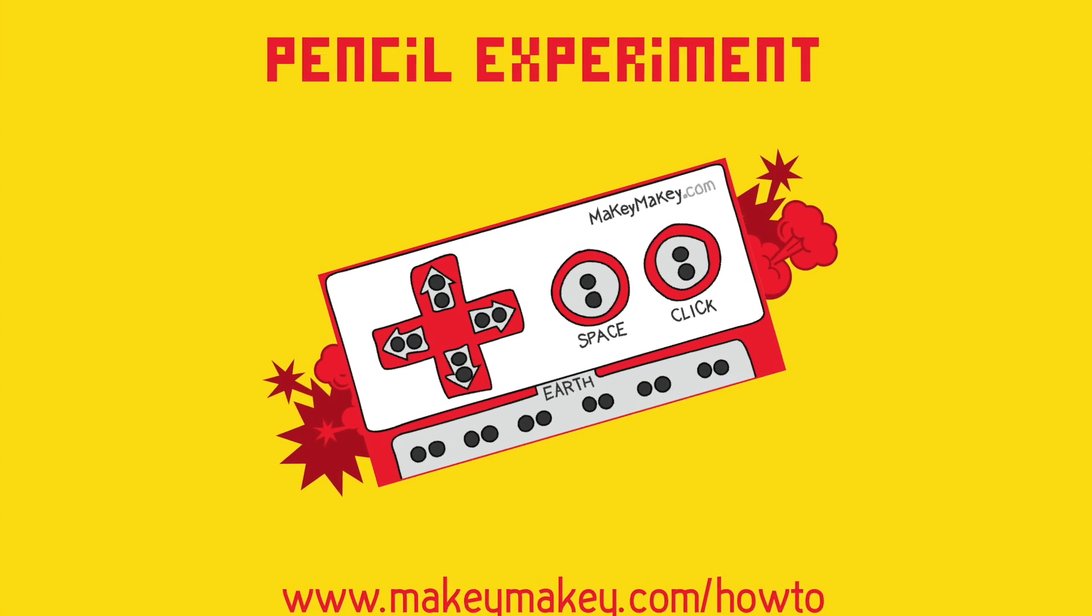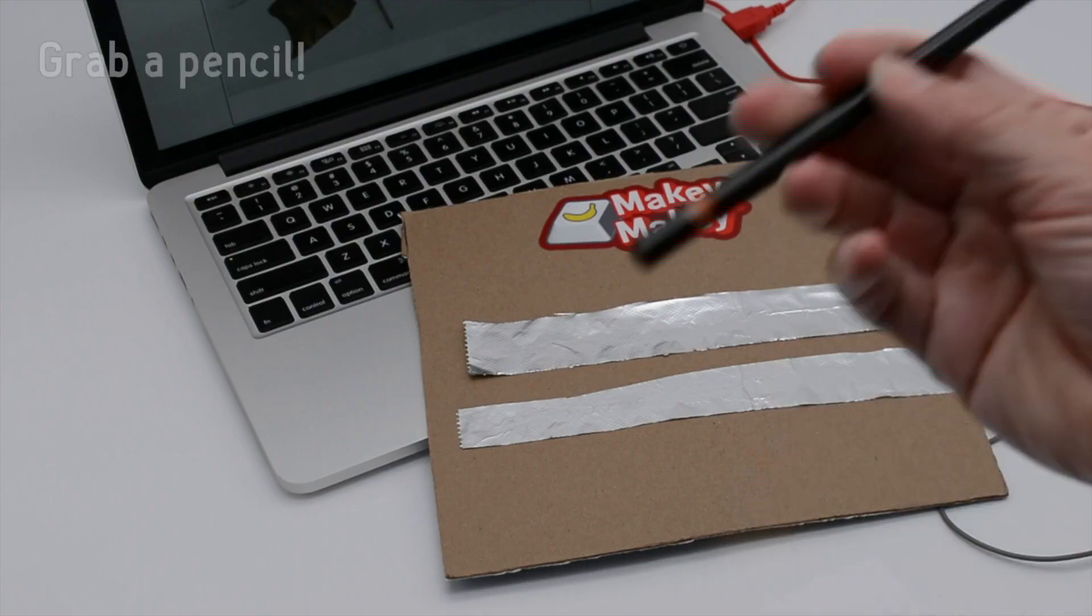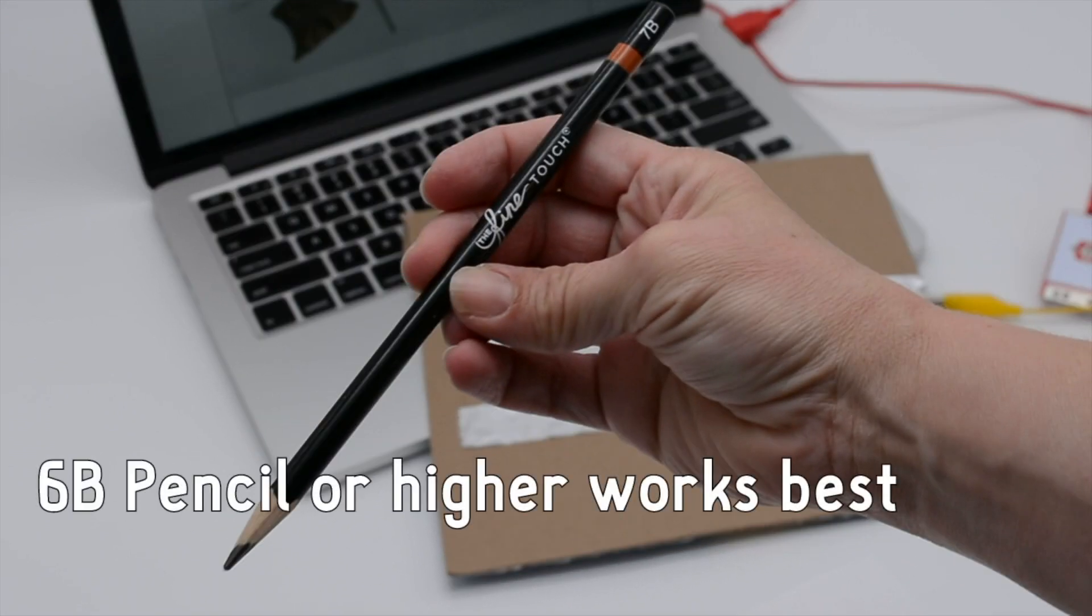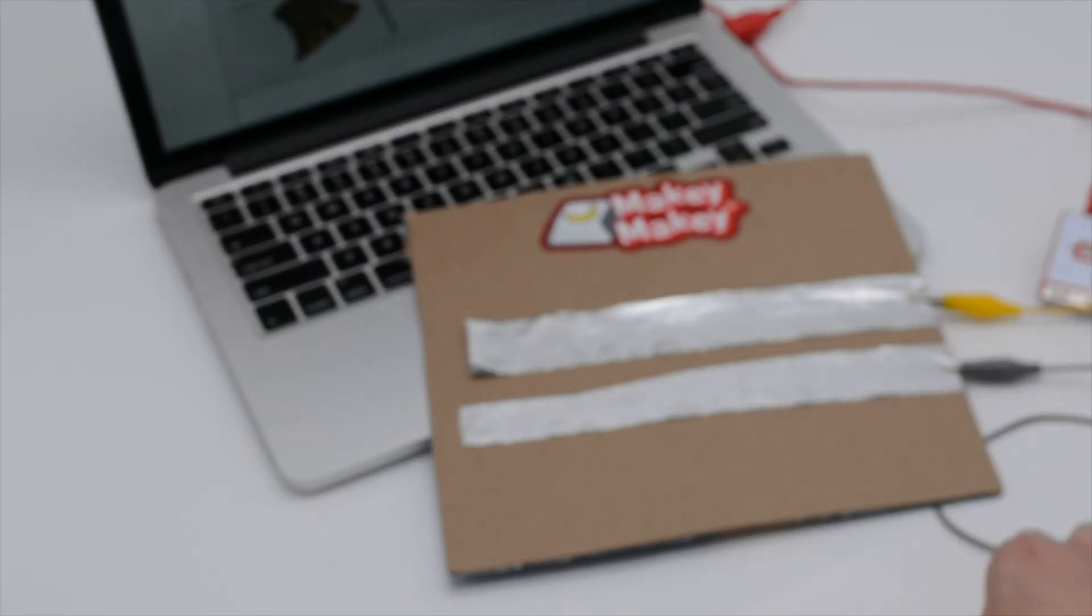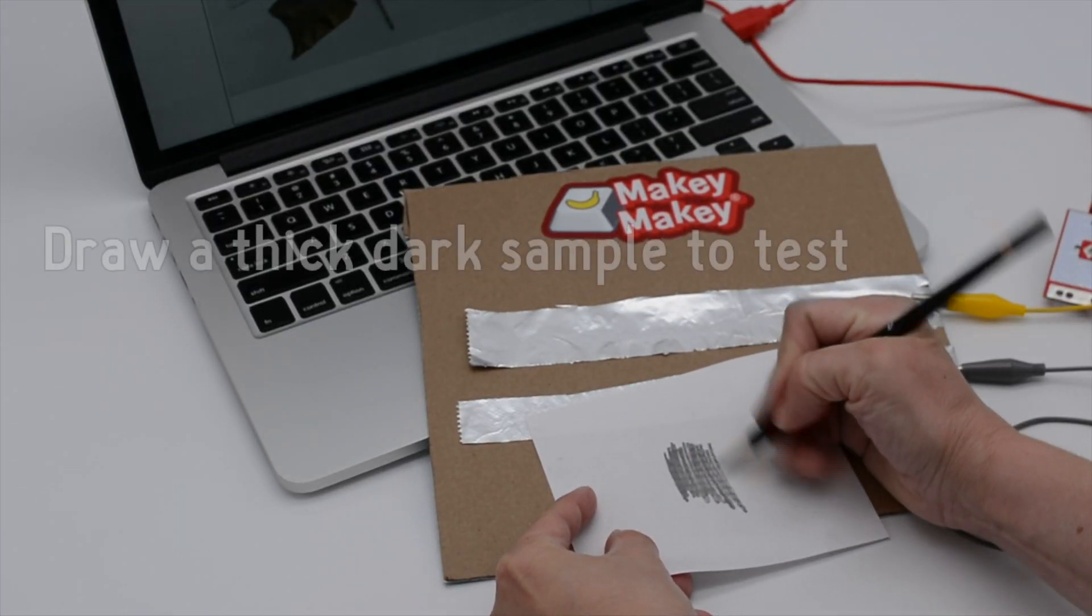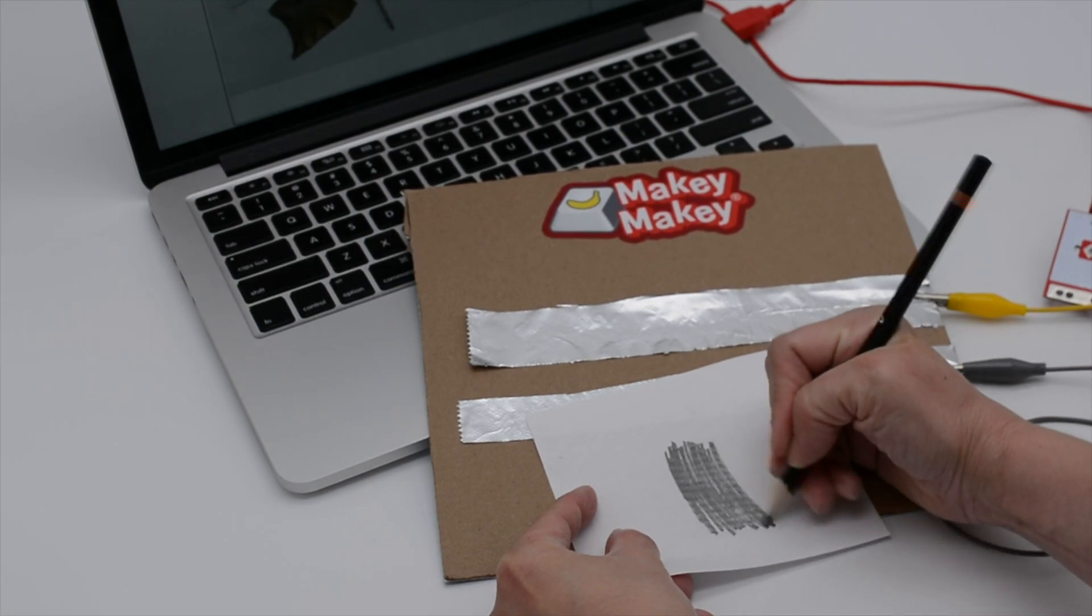In today's lesson, we're going to do a little pencil experiment. Let's get out your conductivity tester from before and get a pencil. If you have one higher than 6B, that works best, but you can still try a 2B pencil. Then just take a piece of paper and draw a thick, dark sample that you're going to test.